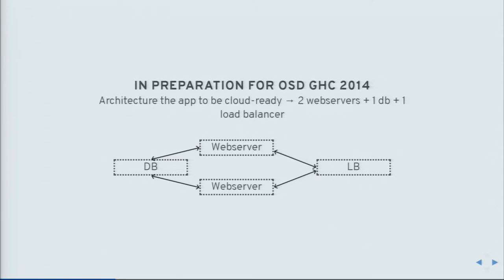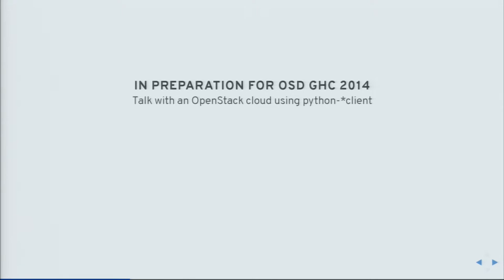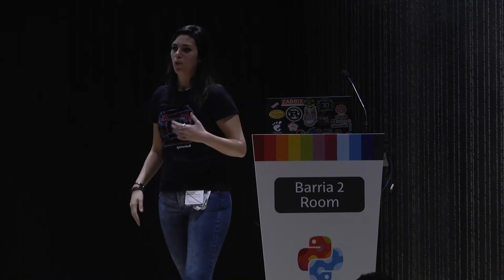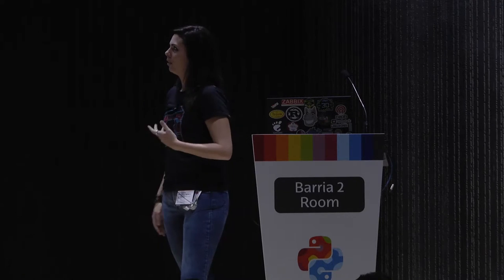The key was to be able to deploy this application quickly with no manual intervention — that meant writing a script to automate it. I came up with a simple architecture: two web servers running the application, one database, and one load balancer. It's HA and can react to changes. Then the question was: with the tools we have in the community, how are we going to automate this? I ended up looking at the OpenStack Python clients, one per project, which seemed the most natural way.